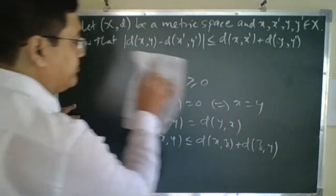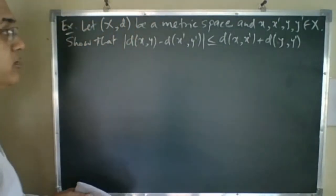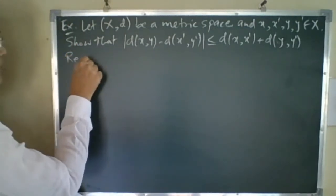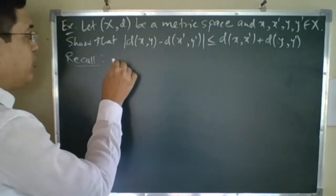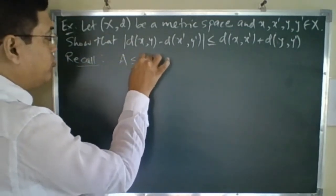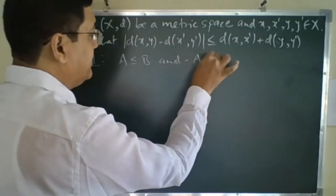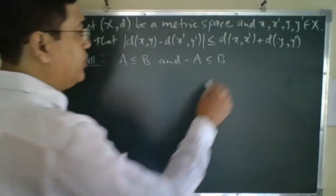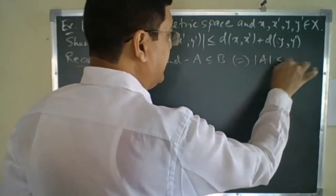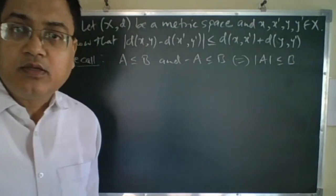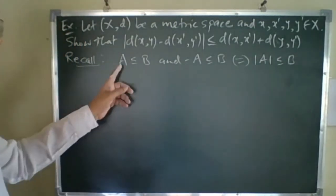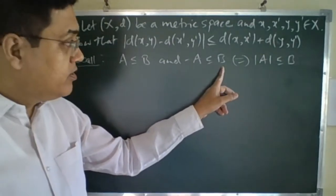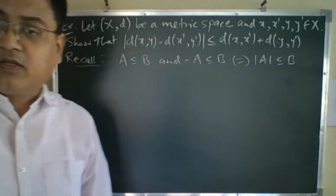One result we recall before following this: if A ≤ B and −A ≤ B, then |A| ≤ B.